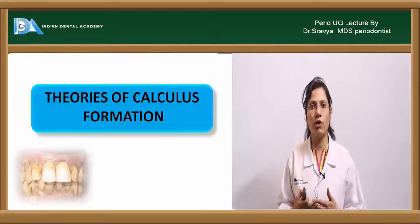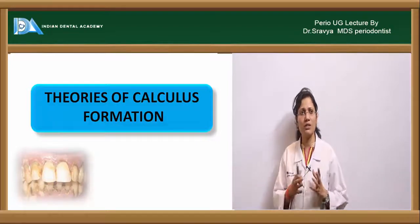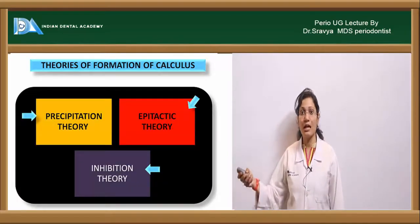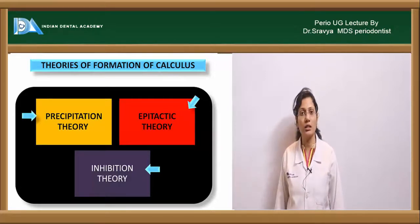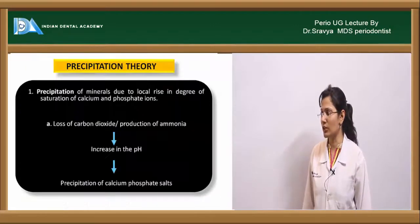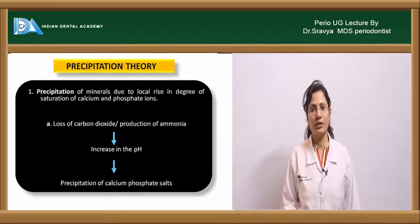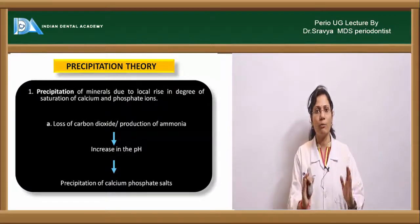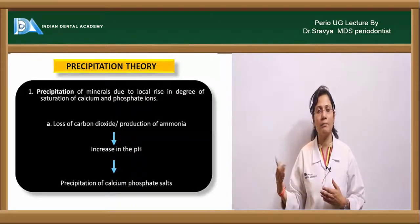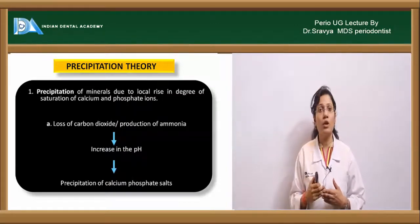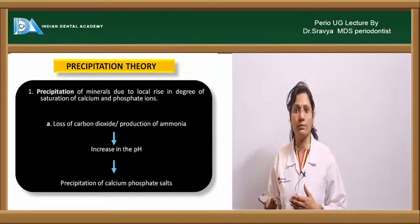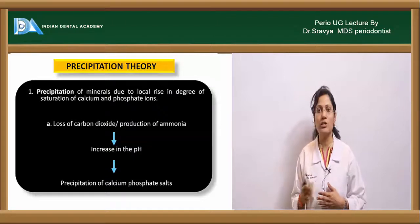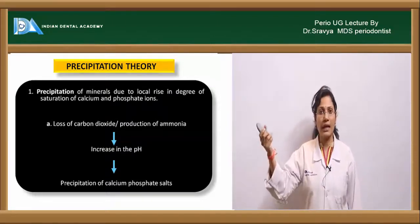Three theories explain calculus formation. The first is the precipitation theory: an increase in pH causes calcium and phosphate ions to precipitate, forming calculus. This occurs through three mechanisms — first, loss of carbon dioxide and increased ammonia production raises pH, causing precipitation; second, colloidal proteins in saliva bind calcium and phosphate ions to form a supersaturated solution, then settle and precipitate calcium phosphate salts; third, enzymes like phosphatases and esterases released by bacteria or host cells hydrolyze organic phosphate, freeing phosphate ions to combine with calcium and precipitate.